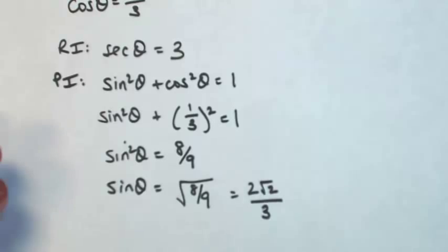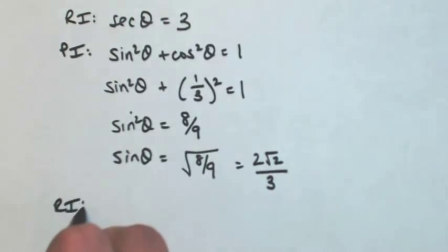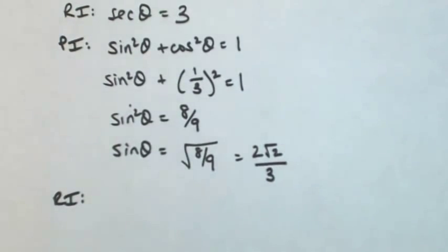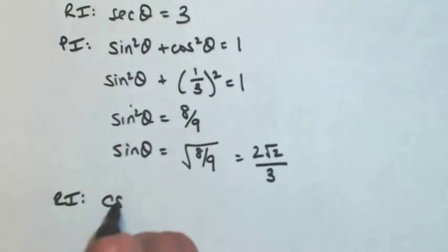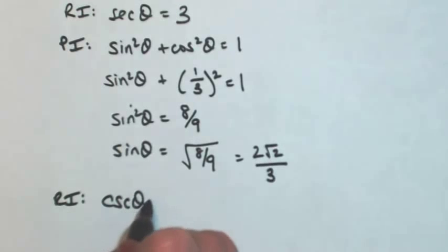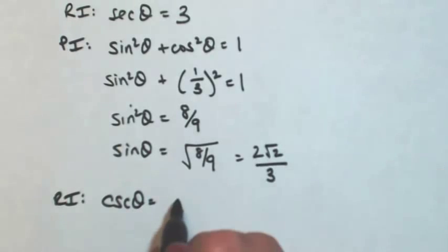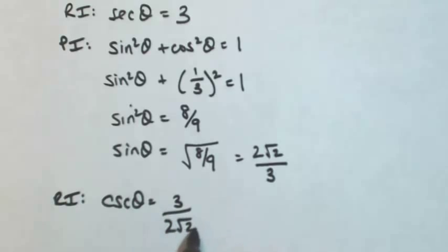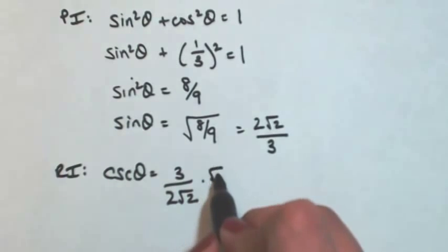Now I know the sine of theta. Let me go back to a reciprocal identity — if I know sine, then I know cosecant. So take the reciprocal of sine and rationalize.